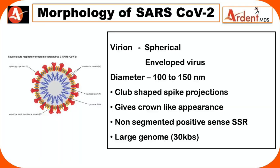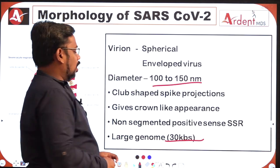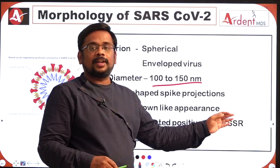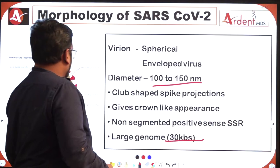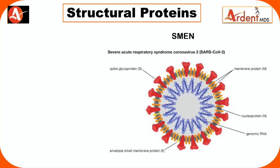Coming to the morphology: this virus is spherical in shape, 100 to 150 nanometers in diameter. It has club-shaped spike projections which give a crown-like appearance — that is why it is called coronavirus. It has a large genome and is a non-segmented, positive single-stranded RNA virus. Coming to the proteins present in COVID-19: